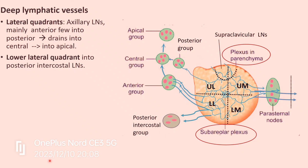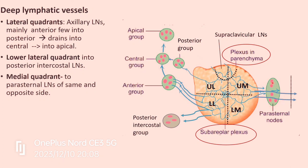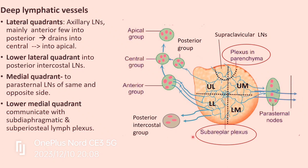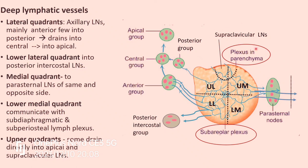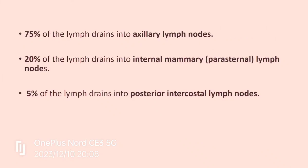From the medial quadrants, lymph goes to the parasternal lymph nodes — not only on the same side but also to the opposite side. From the lower medial quadrant, some lymphatic vessels communicate with the subdiaphragmatic and subperitoneal lymph plexuses, so lymph can reach the abdomen. From the upper medial and upper lateral quadrants, some lymph directly reaches the supraclavicular lymph nodes. Overall, 75% of lymph from the mammary gland drains into axillary lymph nodes, 20% into internal mammary or parasternal lymph nodes, and 5% into posterior intercostal lymph nodes.